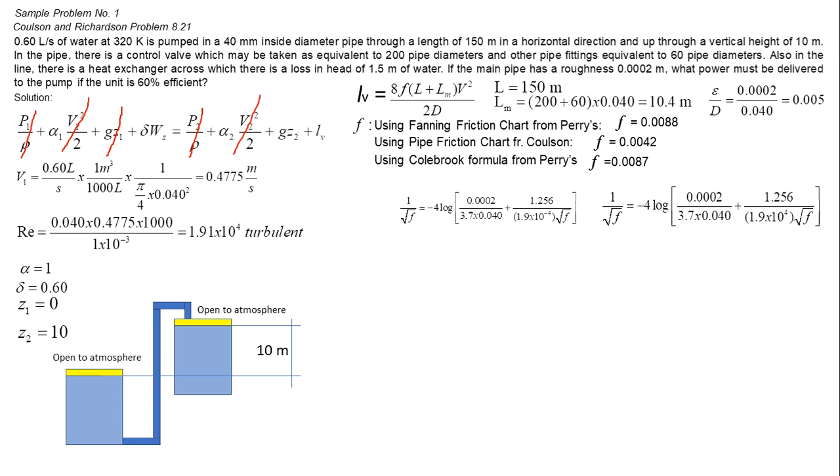These are the values calculated with each different method. Just an important note when solving for friction factor: friction factor evaluated from Coulson is half of friction factor evaluated from Perry's.